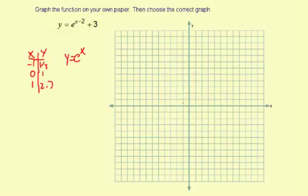So negative 1 and one-third, that's about right there. 0, 1, and then 1, 2.7, that's about right there. So clearly you can see this would be exponential growth.